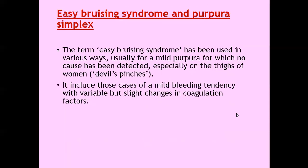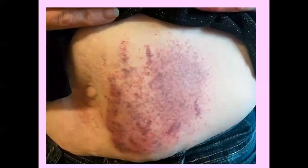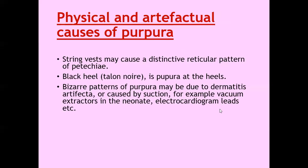Purpura due to decreased support of blood vessels. The blood vessels are usually surrounded by fat, but many disorders result in fat atrophy making the vessels vulnerable. Conditions with abnormal collagen, elastin, or other dermal changes leading to poor vascular support include Ehlers-Danlos syndrome (collagen defect), pseudoxanthoma elasticum (elastic tissue defect), and amyloidosis (abnormal proteins). Scurvy results in altered collagen support of blood vessels and manifests as petechiae or bruises. Actinic purpura (Bateman's purpura), senile purpura, and corticosteroid purpura are the commonest patterns of purpura due to lack of support of blood vessels. Easy bruising syndrome or purpura simplex refers to mild purpura for which no cause has been detected, especially on the thighs of women, also known as the devil's pinches.